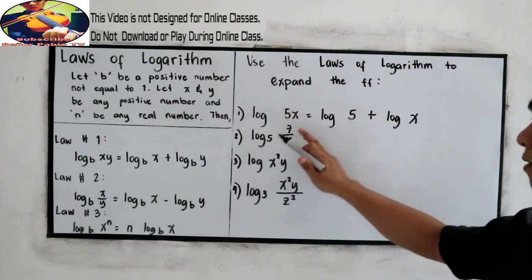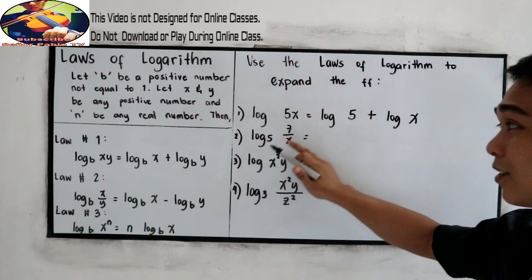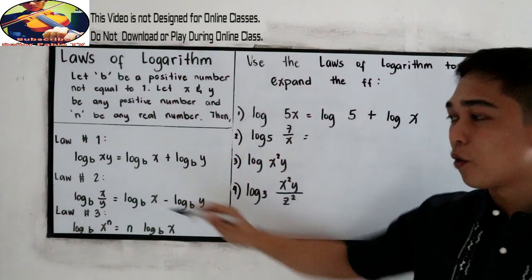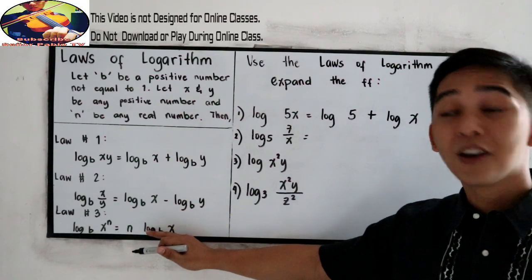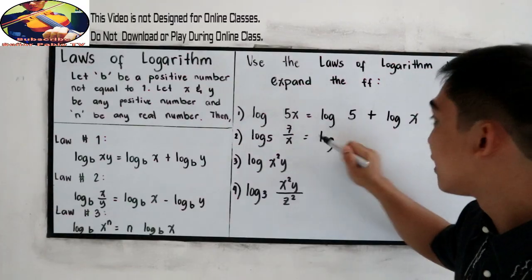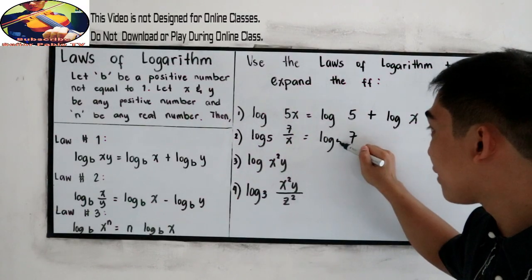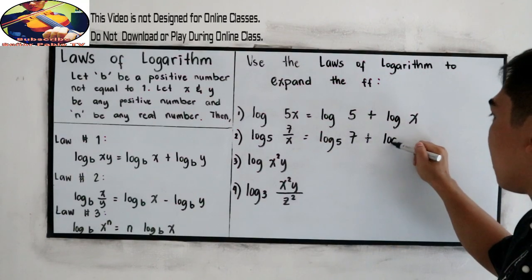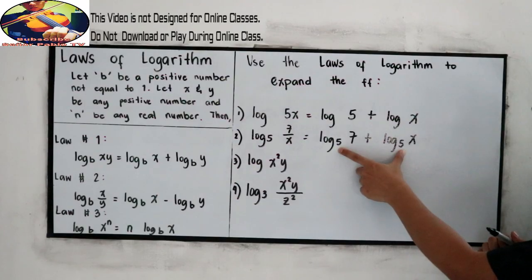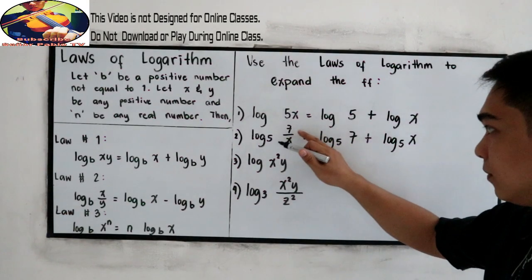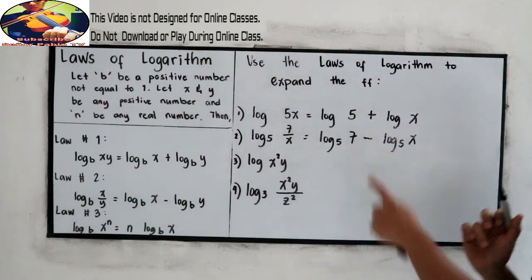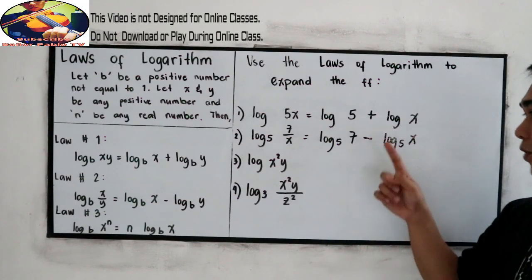Next, Number 2: log(7/x) base 5. It is written in fraction form, so we use Law Number 2 — division becomes subtraction. The expanded form is: log 7 base 5 minus log x base 5. Be careful with your sign — it must be minus, not plus.